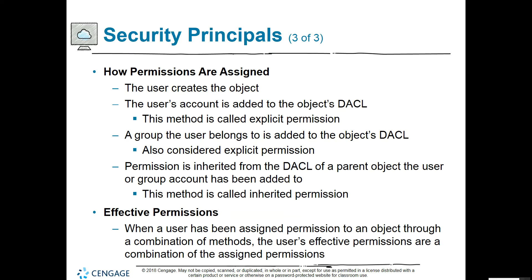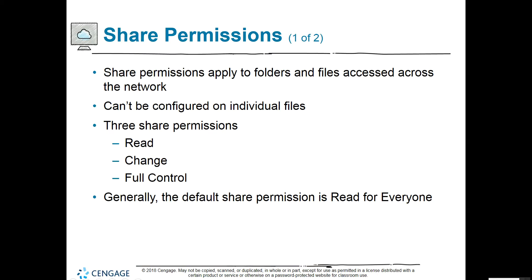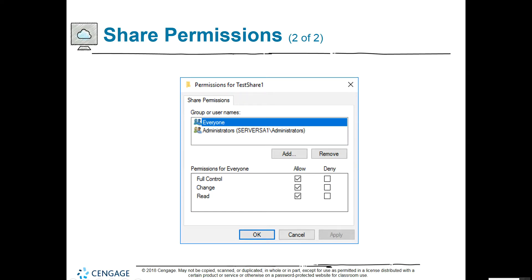Permissions are assigned in several ways: the user creates the object and their account is added to the object's DACL — that's called explicit permission; a group the user belongs to is added to the object's DACL; or permission is inherited from the DACL of a parent object. There are three types of share permissions: read, change, and full control. The default share permission is read for everyone — you can read it but not change it.